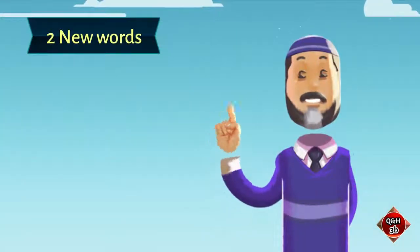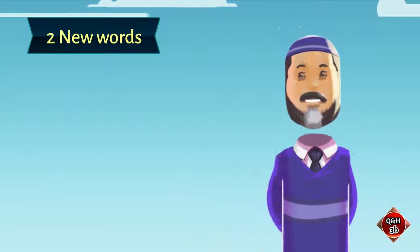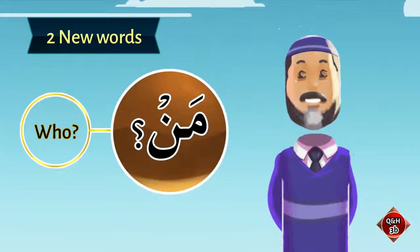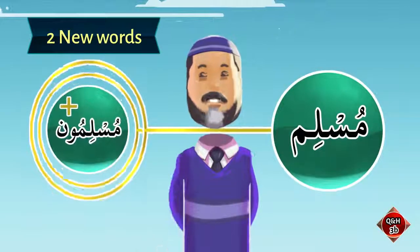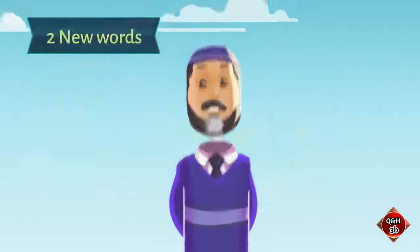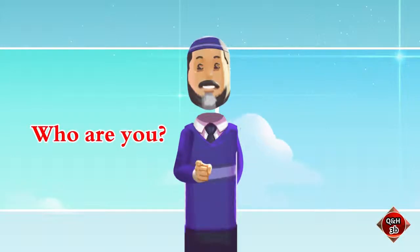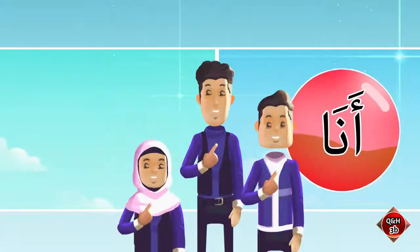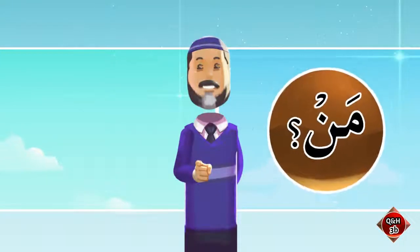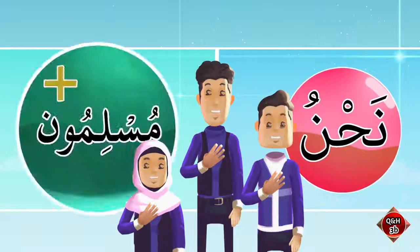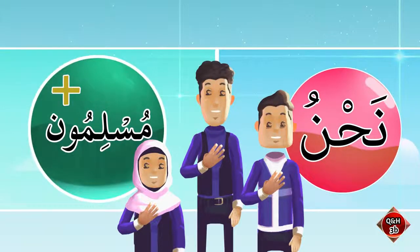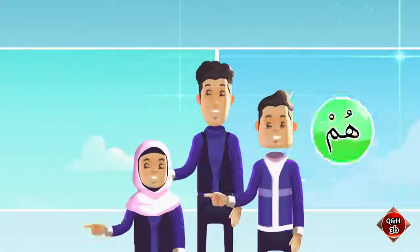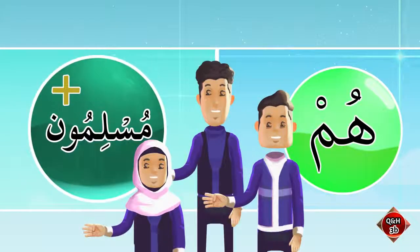Let us learn two new words first before we go into spoken Arabic. 'Man' means 'who' — a question word. And the plural of 'muslim' is 'muslimoon.' If I ask you 'who are you?' you will say 'I am a Muslim.' In Arabic: man anta? Ana muslim. Man antum? Nahnu muslimoon. Man huwa? Huwa muslim. Man hum? Hum muslimoon. Very good!